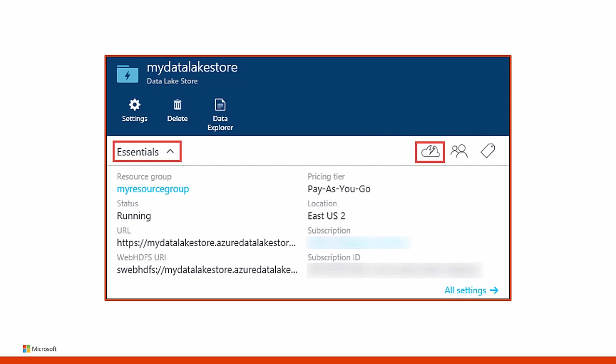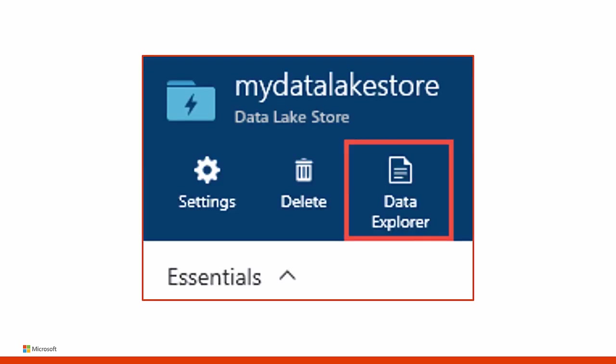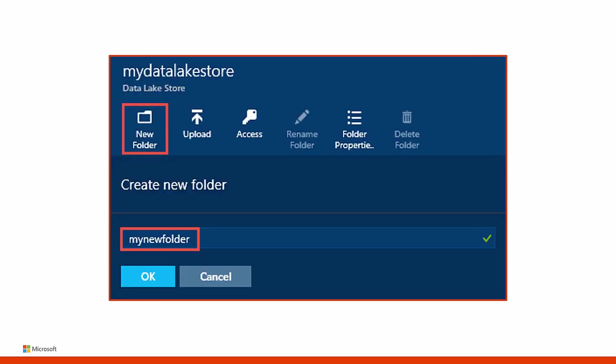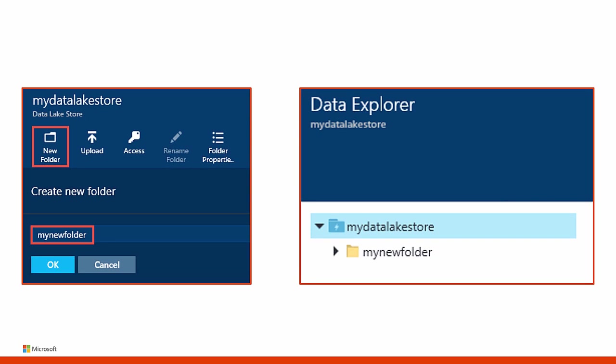Now we will create folders under your Data Lake Store account to manage and store data. Open the Data Lake Store account. From the left pane, click Browse, click Data Lake Store, and then from the Data Lake Store blade, click the account name under which you want to create folders. If you pinned the account to the Startboard, click that account tile. In your Data Lake Store account blade, click Data Explorer, then click New Folder, enter a name for the new folder, and then click OK. The newly created folder will be listed in the Data Explorer blade. You can create nested folders up to any level.